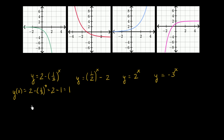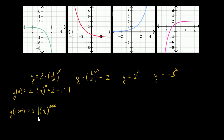Now let's think about the behavior of this function — what happens when x approaches a very large number. Let's imagine y of 1,000. That's going to be 2 minus 1 third to the 1,000 power. Multiplying 1 third by itself 1,000 times gives a very, very small number — very close to 0. So as x increases, this part approaches 0.